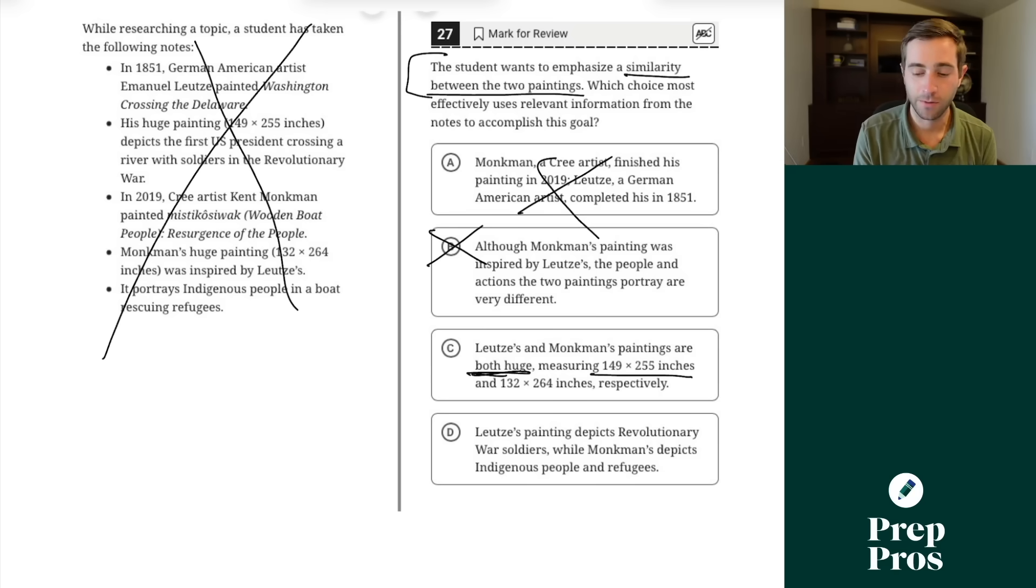Measuring 149 by 255 inches and 132 by 264 inches respectively. Lutze's painting depicts Revolutionary War soldiers, while Monkman's painting depicts Indigenous people and refugees. Well, only one answer choice showed a similarity between the two paintings. Therefore, without ever even wasting time reading the notes, we can find the correct answer. Now, there are rare instances where this doesn't work. If you look through the answer choices and two seem to be properly doing what the SAT wants, then it's time to go back.